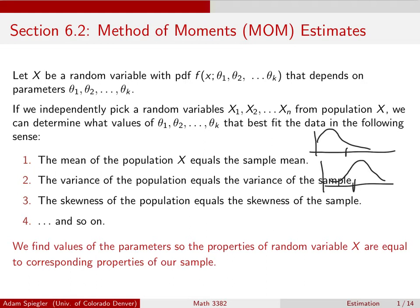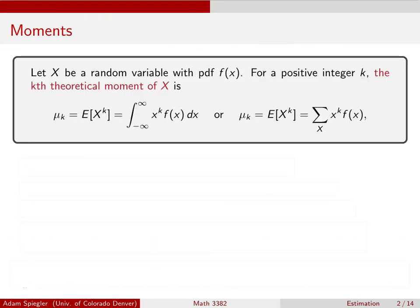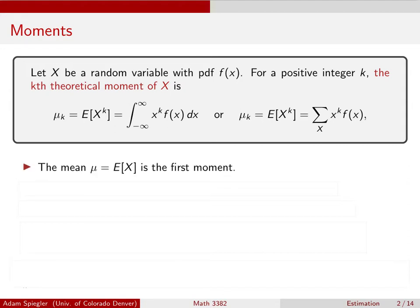We want to find parameter values so that our population resembles what our sample looks like. To formalize this, we use what are called moments. For a random variable X with PDF f and any positive integer k, we define the k-th theoretical moment of X — denoted mu_k — as the expected value of X raised to the k-th power.